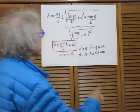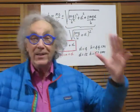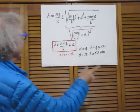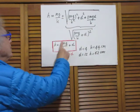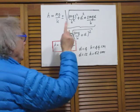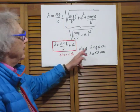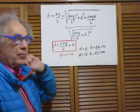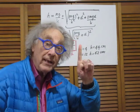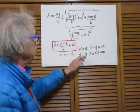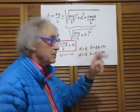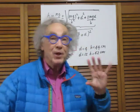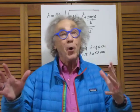Therefore, since 2mg over k is 40 centimeters, little h will always be 40 centimeters plus d. If d is 4 centimeters, h will be 44 centimeters; if d is 12 centimeters, small h will be 52 centimeters. So it is not a coincidence.